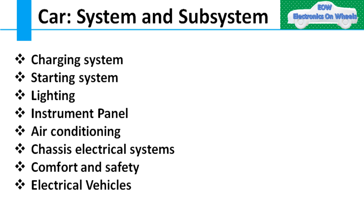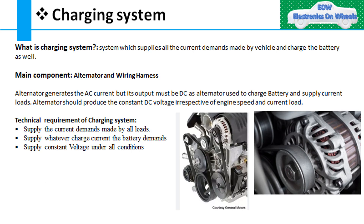Let's start with the charging system. The first question that comes to mind is: what is the charging system in a car? The charging system is nothing but a system which supplies all the current demands made by loads and the current required to charge the battery. The main component of the charging system is the alternator, supported by wiring harness.